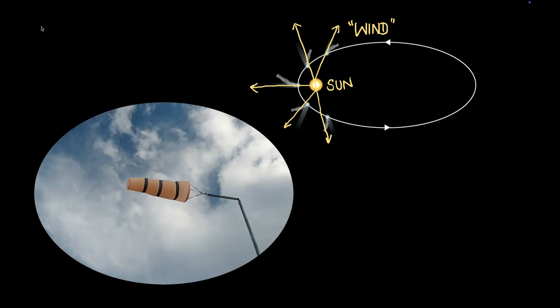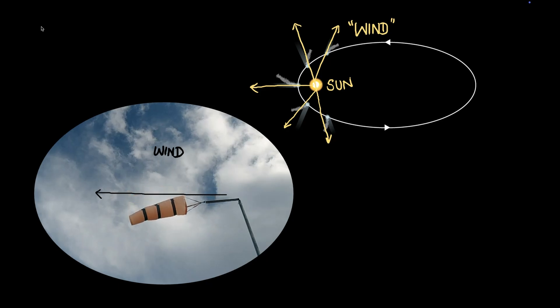This is actually very similar to a flag or a windsock. You can see in this video, you can look at the windsock flying in a particular direction, so you know that this is the direction of the wind. The sock points in the direction of the wind. Similarly, the tail, the dust tail and the gas tail, they point away from the sun because the direction of the wind from the sun is away from the sun.